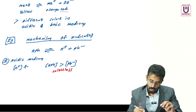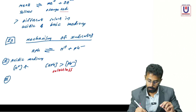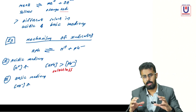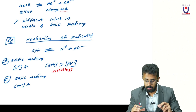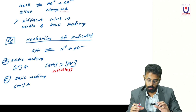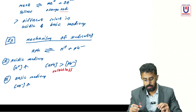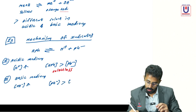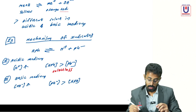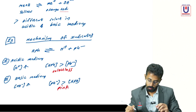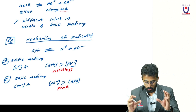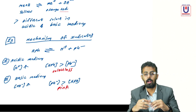In basic medium, OH⁻ is present. H⁺ and OH⁻ react, so the effective concentration of H⁺ is reduced. According to Le Chatelier's principle, the equilibrium shifts in the forward direction, making the concentration of pH⁻ greater than that of HpH. Since pH⁻ is pink, the solution turns pink. So phenolphthalein shows no color in acidic medium and pink color in basic medium.